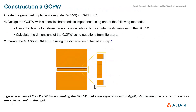To construct a grounded coplanar waveguide in FEKO, we first need to do some design analysis. We can use a transmission line calculator — a third-party tool — to calculate the dimensions of the grounded coplanar waveguide, or we can use equations from the literature to calculate the dimensions.